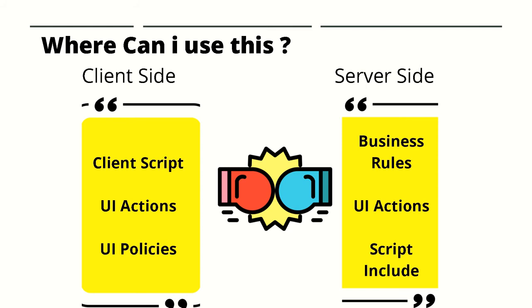So where and when can a developer actually use certain features within ServiceNow? We typically break APIs into two subcategories — client-side and server-side. On the server-side we have things like Business Rules, Script Includes, and UI Actions. On the client-side we have Client Scripts and UI Actions, which work on both server and client-side. UI Policies also work on both sides, as we have seen in previous tutorials.